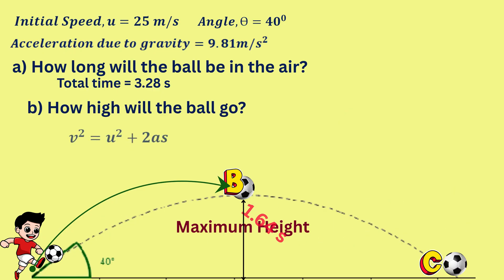We'll use the second kinematics equation to calculate the maximum height. So again, the focus will be on the vertical component of the ball's motion. Now let's make our substitutions.